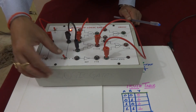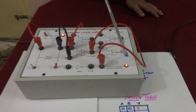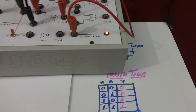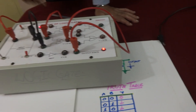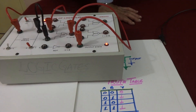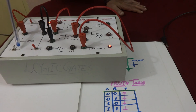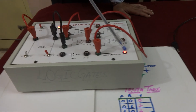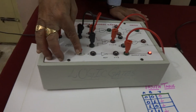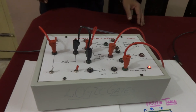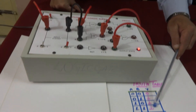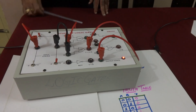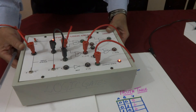Now let me turn B to 1. The second row: A is 0 and B is 1 — the output is 1. Next, verifying A is 1 and B is 0 — the output is still 1. Finally, when both switches are turned to 1, the output is 1.